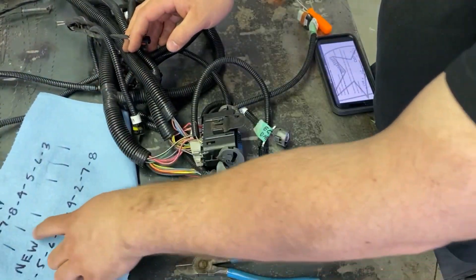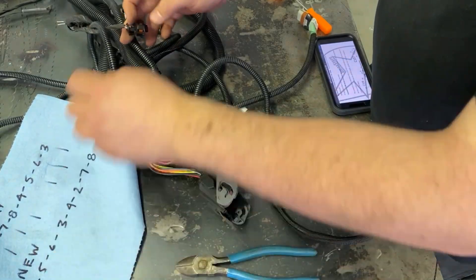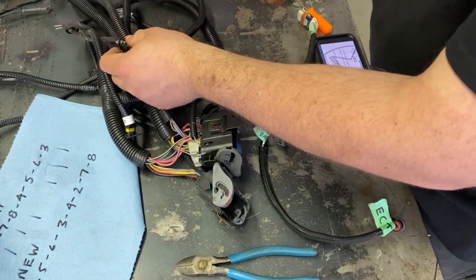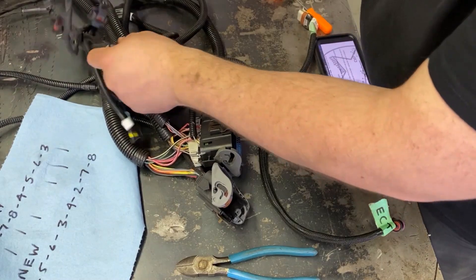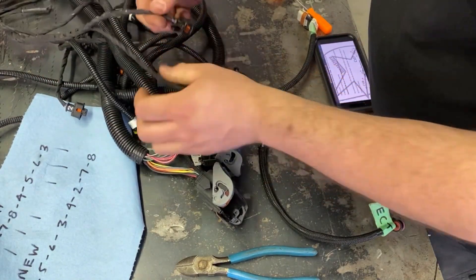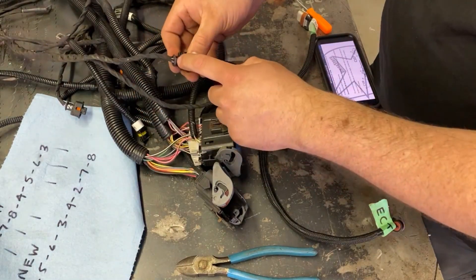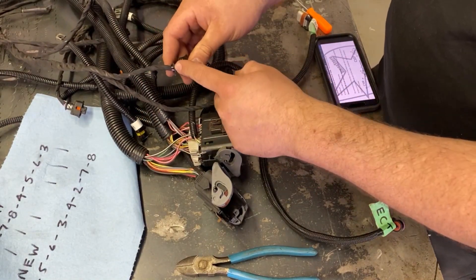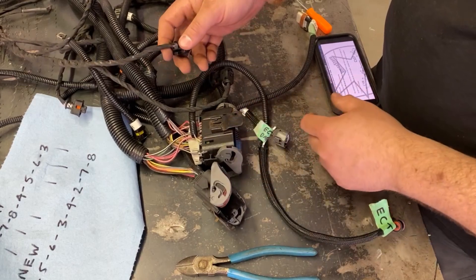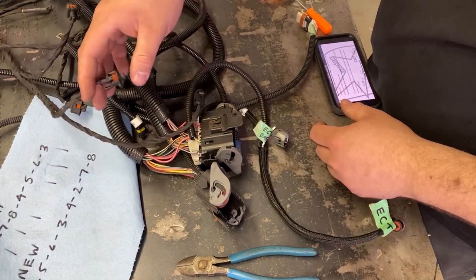With our cross-reference here, we know that two and five swap. We're going to go to number five, which is over here. They just happen to be labeled from when it was on the engine before. Good job, Huey. We can see that it has the black and white, which matches this connector. So that one's good.